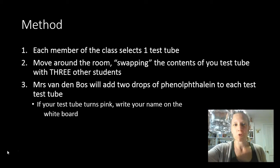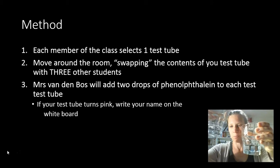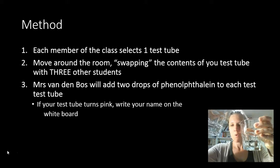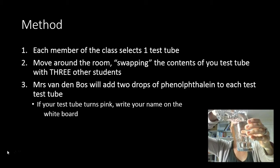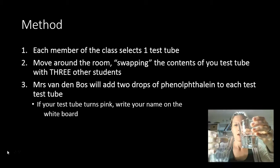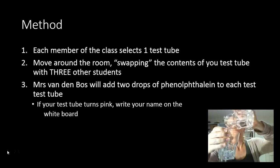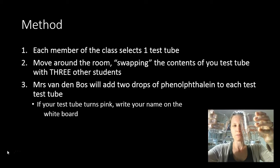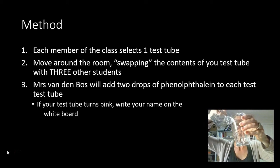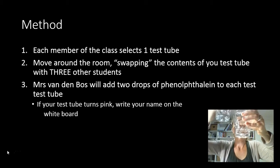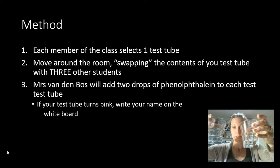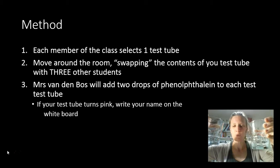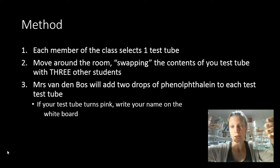As you meet students, you're going to swap the contents of your test tubes. Here's my other test tube, which is also clear and colourless. What we're going to do when we meet is pour one into the other, and then pour back again. Now we're sure that we've got a good thorough mix of the contents. Finally, we'll divide it roughly evenly back between the two of us. And now we're done — we have swapped the contents of our test tubes, and we will each go away and find two other students and do the same.